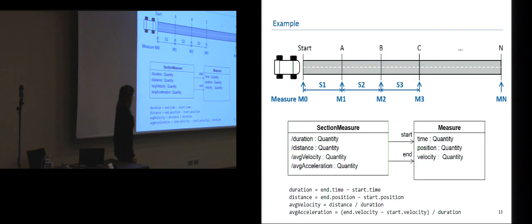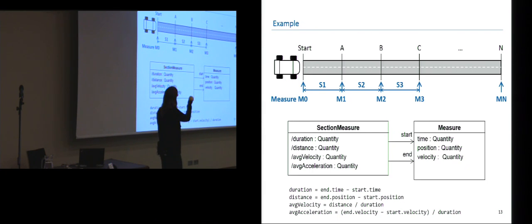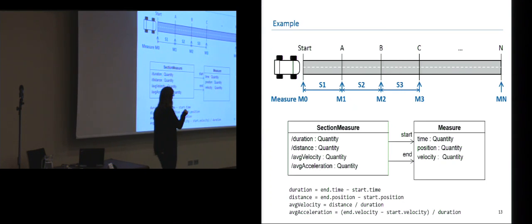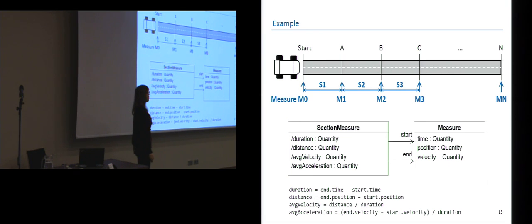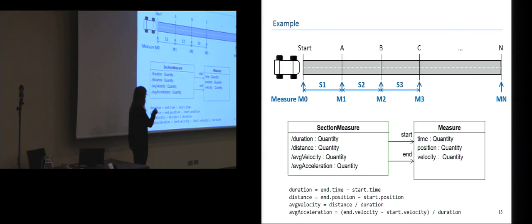Let's consider a simple example also used in the paper. We have a track traversed by a car, and at certain points on this track we are taking measurements — in particular of the time, position, and velocity. We can use the quantity type to represent in instances the uncertainty of the measurement method and the unit — for instance, whether time was given in seconds, or position in miles or meters. We would also like to perform computations, such as calculating the average velocity and average acceleration of the car on a particular section.